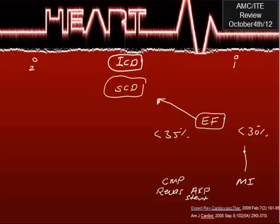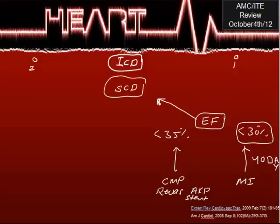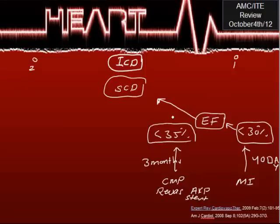The timing is also a source of confusion. After AMI, if within 40 days you check the ejection fraction and it is at or below 30%, this is high risk for sudden cardiac death and there is a good indication for ICD. For cardiomyopathy or revascularization surgery — stent or CABG — you check after three months. If after three months the ejection fraction is still around 35%, there is also a good chance of sudden cardiac death.